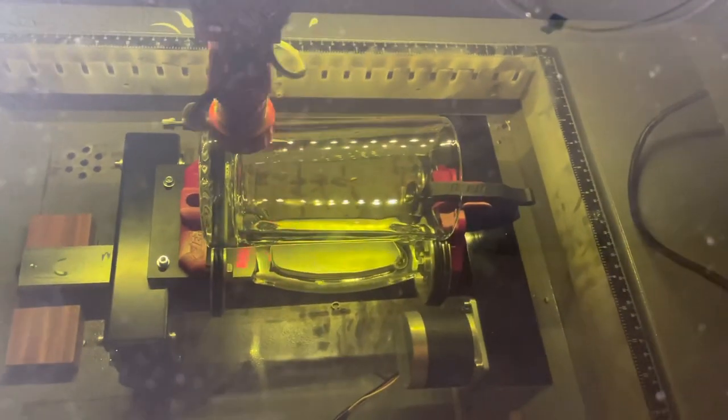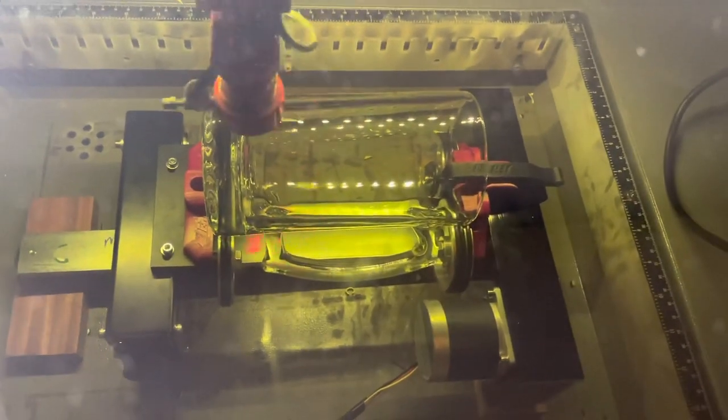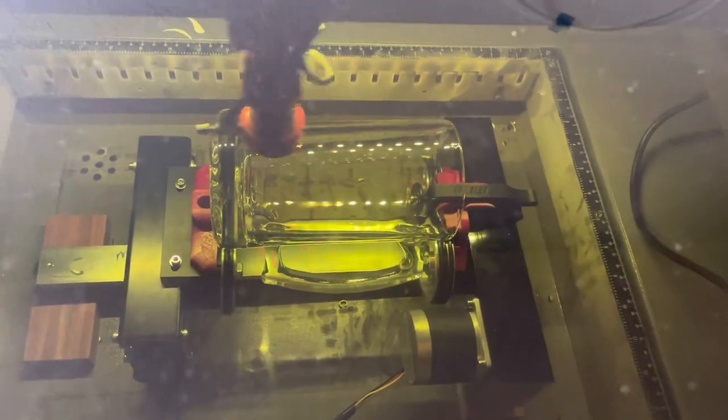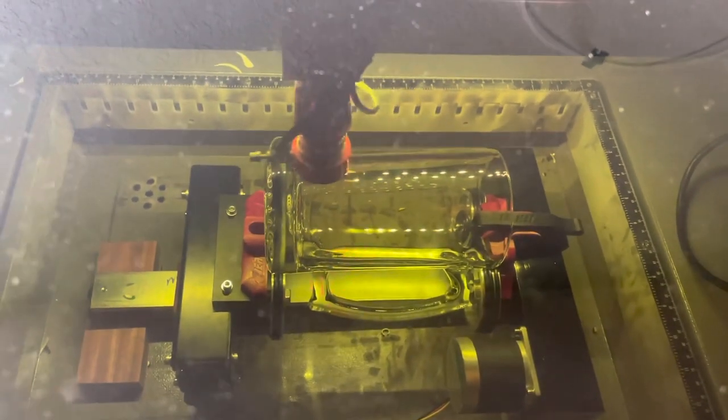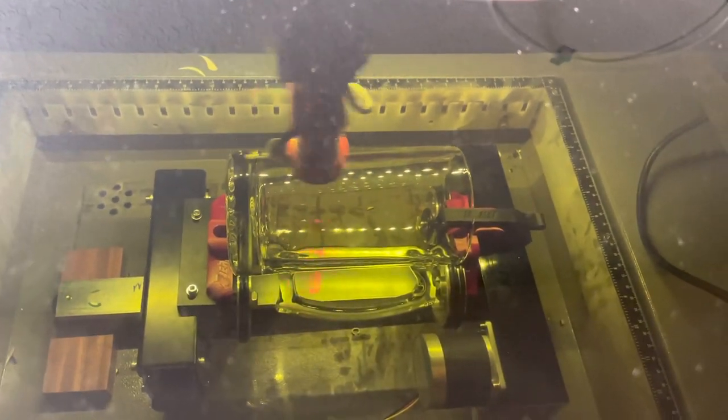So whenever you're using this type of rotary, the roller rotary on these machines, you need to make sure that you mirror your image because if you don't, it's going to come out backwards on the glass. So make sure you do that.